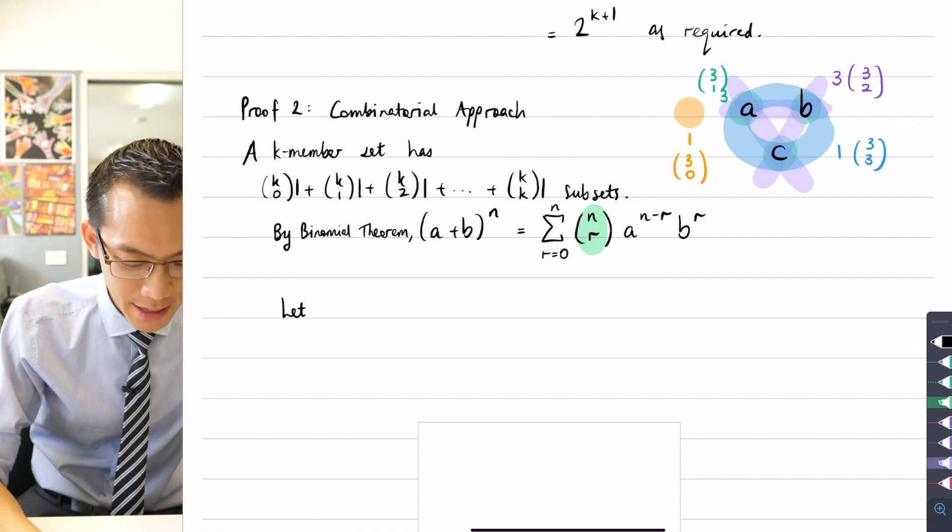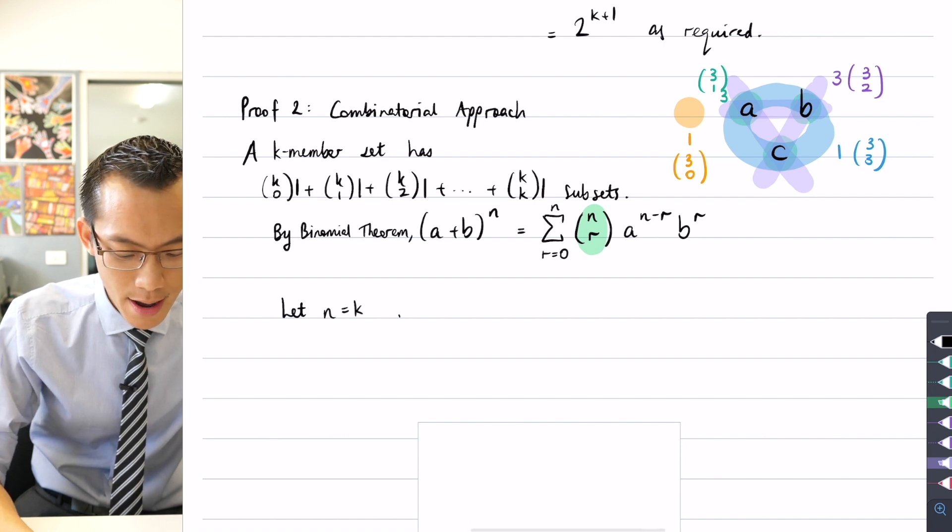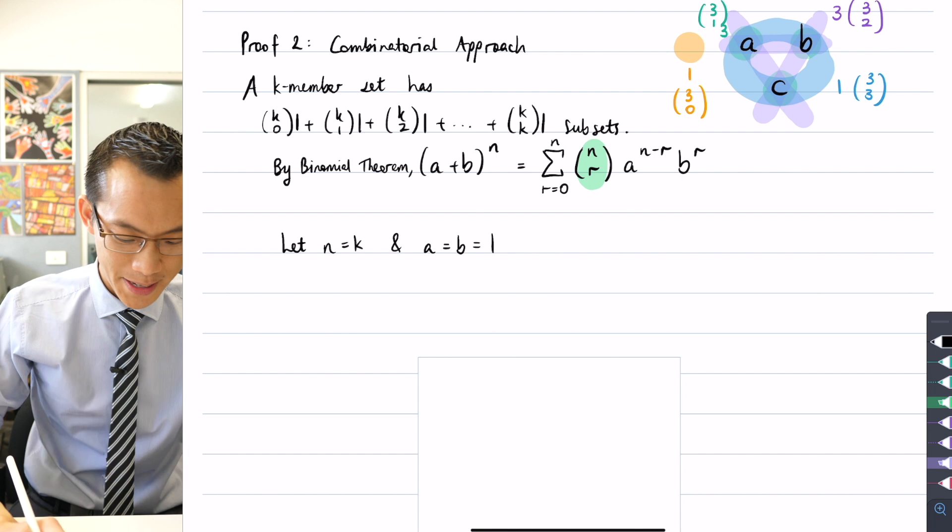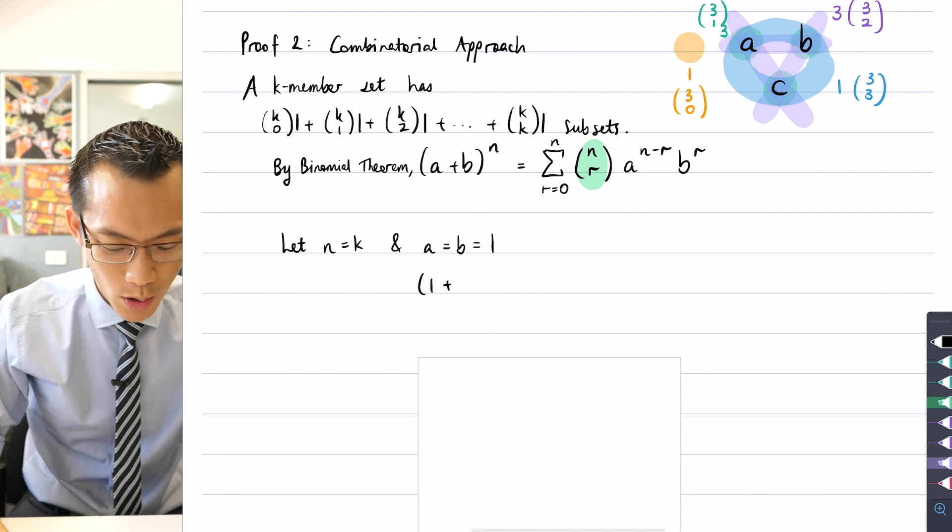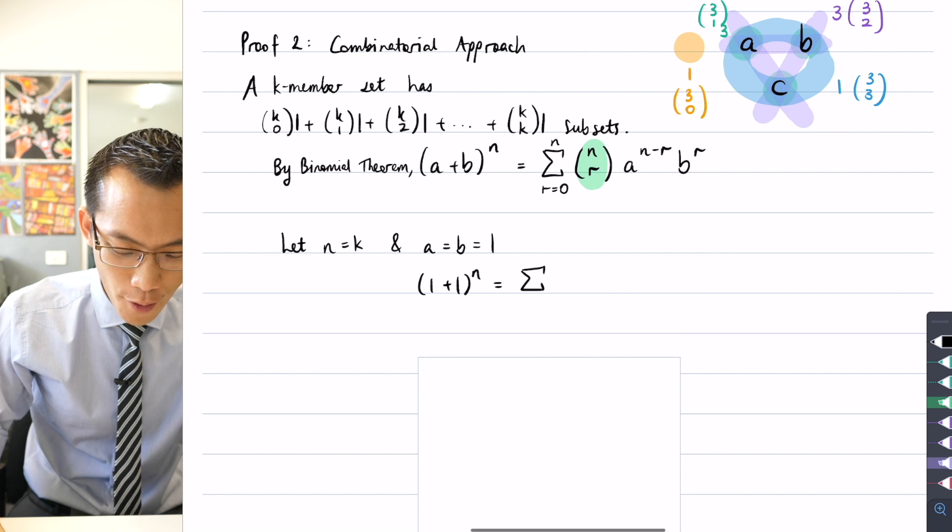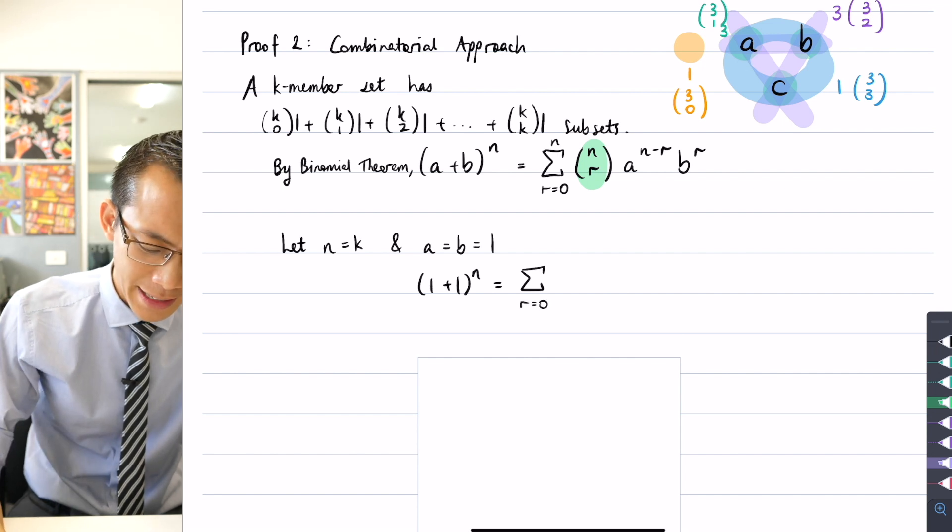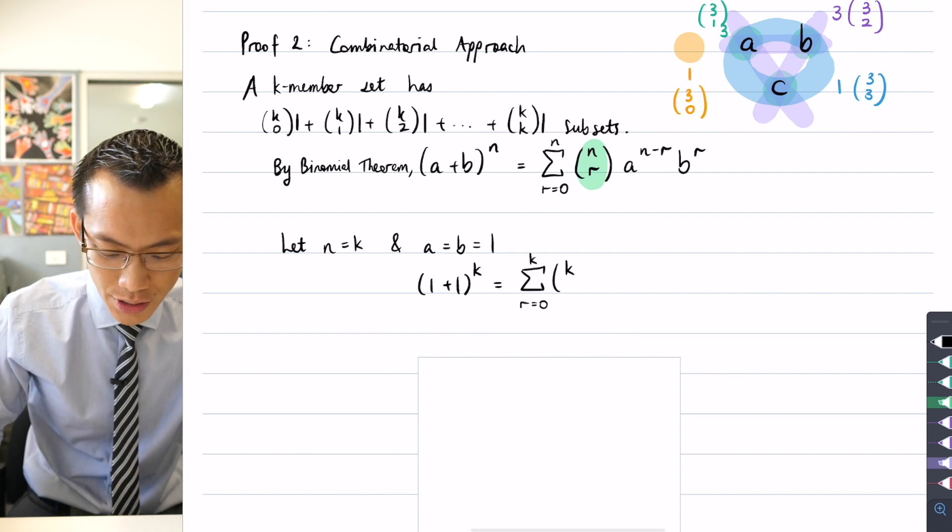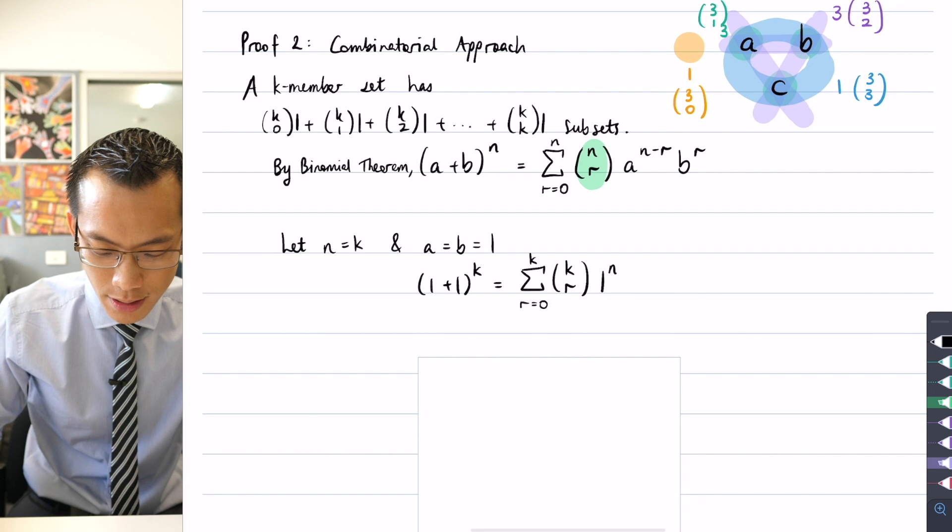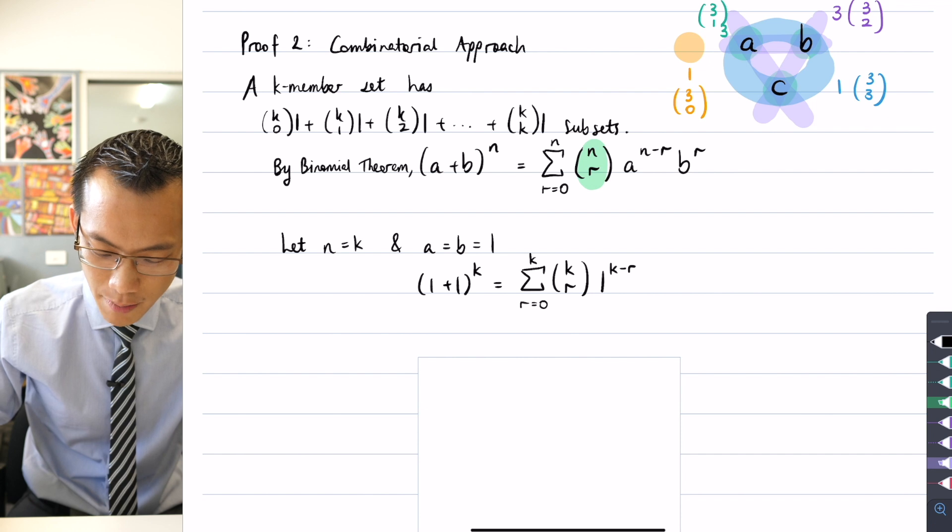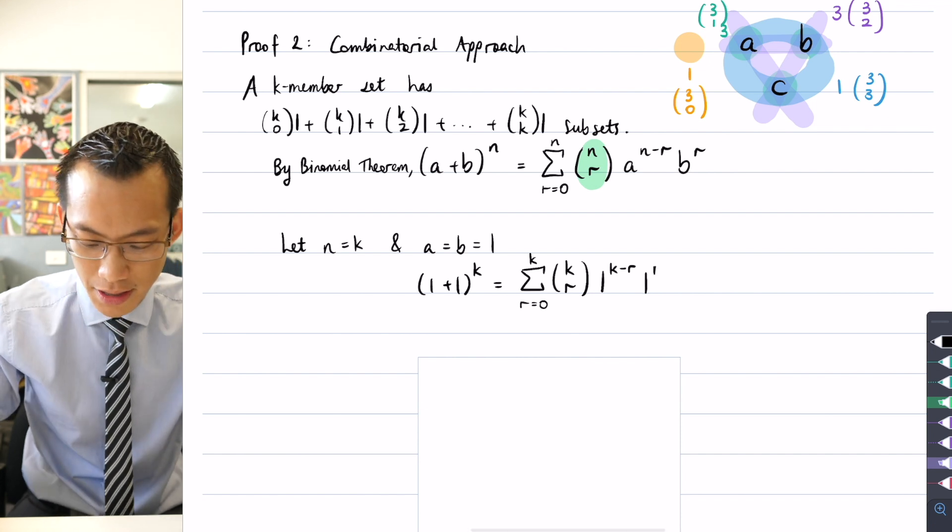Let, firstly, I said n equals k, and both a and b equal one. Watch out, this is so quick. If you blink, you're going to miss it. I'm going to go one plus one to the n equals. The sum from r equals zero, should have said k instead of n because I already did that substitution, of k choose r, and then this is one to the k minus r times one to the r.